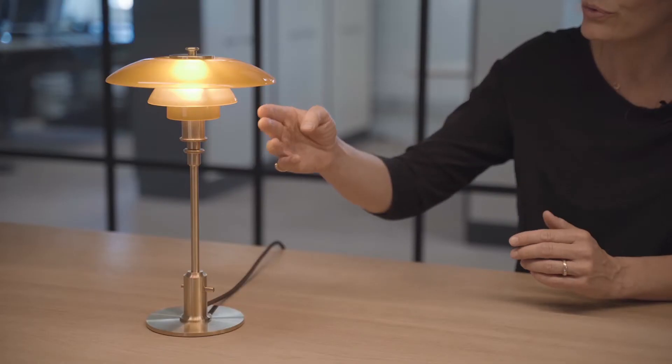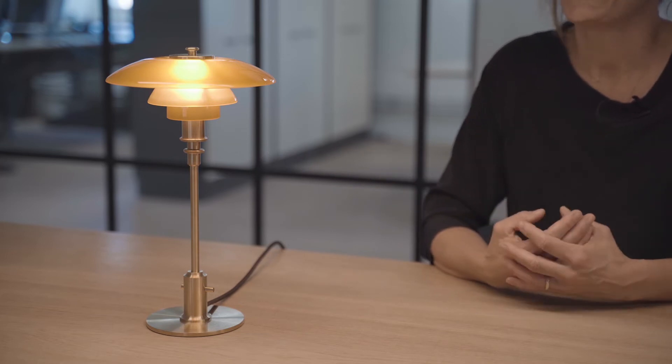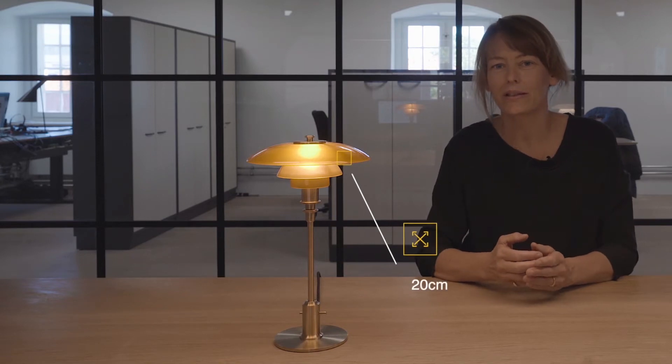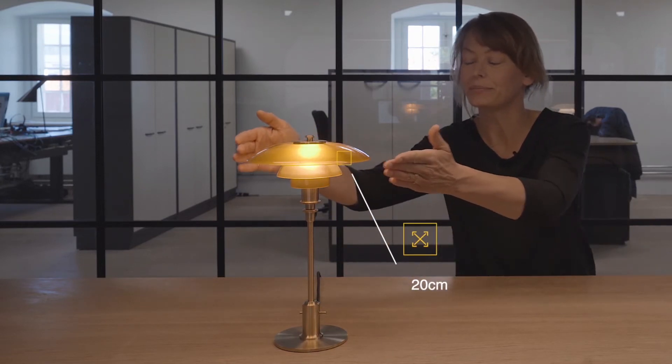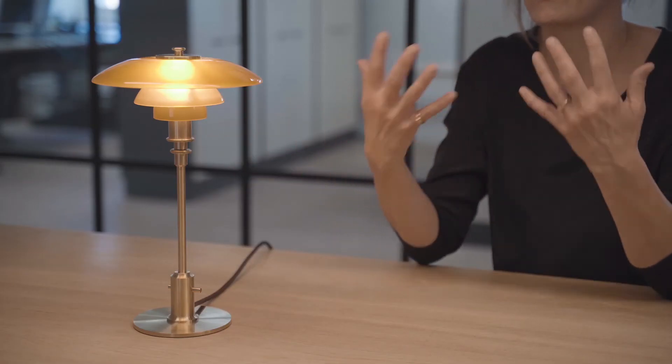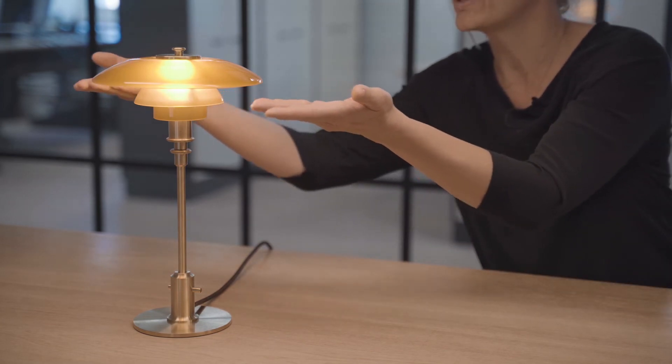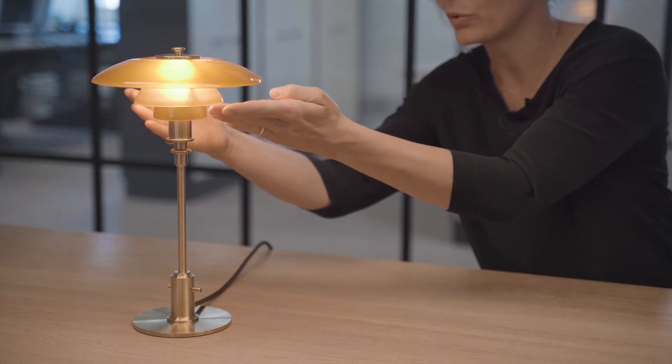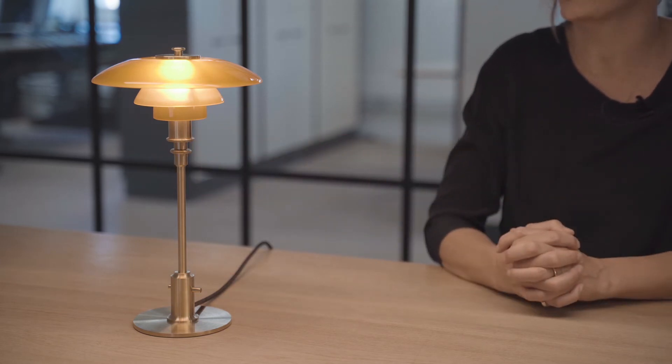The 2-1 in the name PH 2-1 refers to the size of the lamp. The 2 refers to the top shade, and the 1 refers to the two lower shades. A size 2 is approximately 20 centimeters in diameter. And for this size, it's a hybrid size. This makes a very elegant look, where you have a wider top shade and a more narrow lower set shade here.